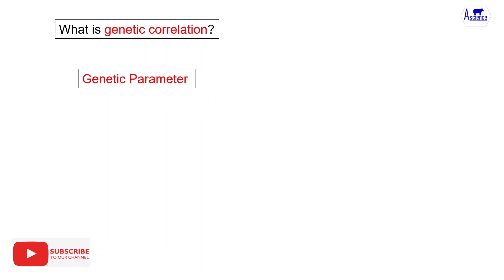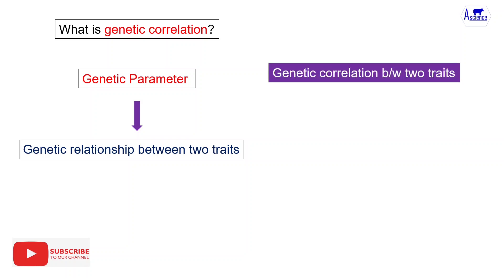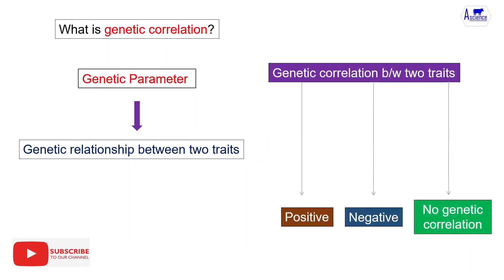First of all we will see what is genetic correlation. Genetic correlation is a genetic parameter that tells us about the genetic relationship between two traits. The genetic correlation between two traits might be positive, negative, or there is no genetic correlation.